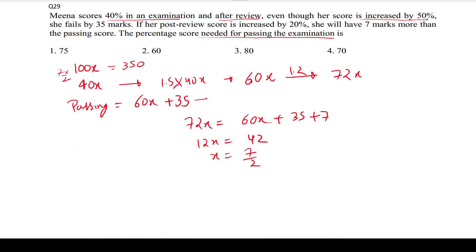The passing marks will be 60 times 7/2 plus 35. This will be 210 plus 35, which equals 245. So the passing score is 245 out of 350.